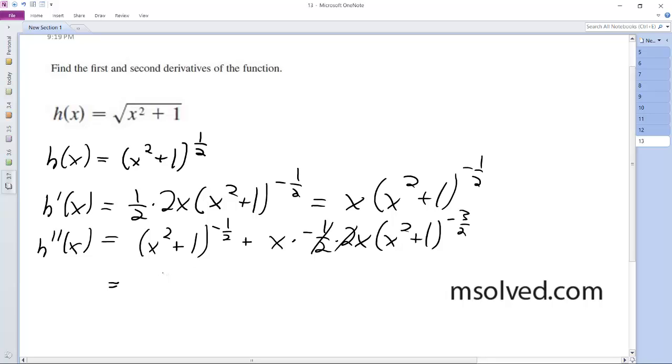So we end up with, it can be simplified more, but I'll just leave it like this, negative 1 half minus x squared. There we go.